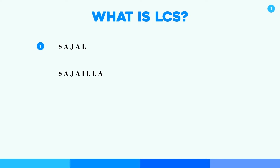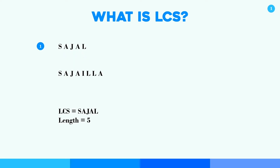Now let's see how our brain thinks to find out the common subsequence. Firstly we take S and compare it to find a match — S and S is matching. Then A and A is matching, J and J is matching, A and A is matching, L and I is not matching, then L and L is matching. We already got the common subsequence. We can see our first string is totally common with the second one, so we can tell that it is the longest common subsequence with a length of five.